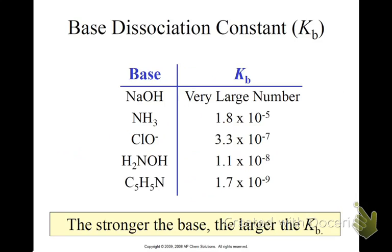The stronger the acid, the larger the Ka. If you're given two K values, whether it be for an acid or a base, and you're asked to tell which one is a stronger base or which one's a weaker base, you just look at the magnitude of the values.